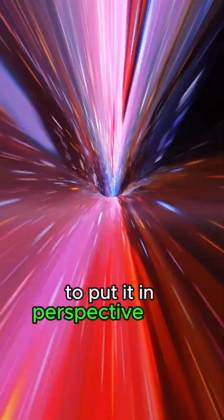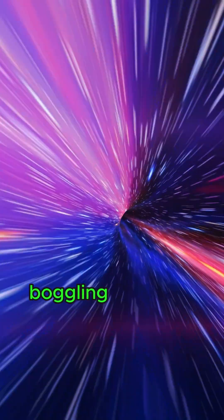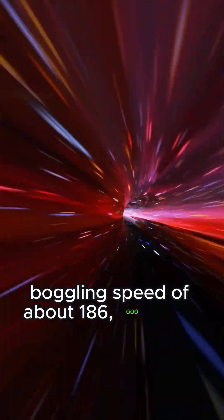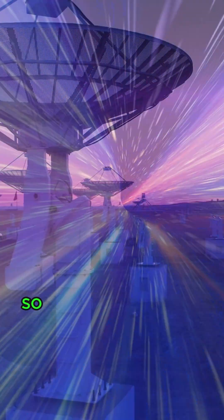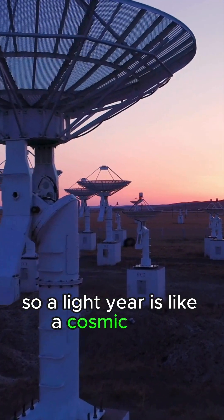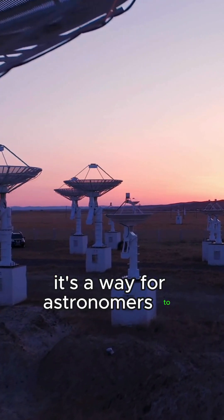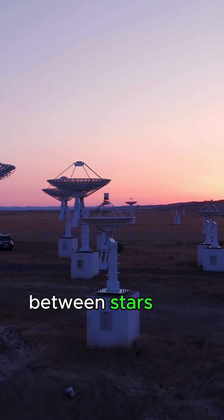To put it in perspective, light travels at a mind-boggling speed of about 186,000 miles per second. So a light year is like a cosmic ruler. It's a way for astronomers to measure vast distances between stars and galaxies.